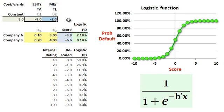Let's say we figured out that the coefficients are negative eight and negative two. The reason these are negative is that as these ratios go up, the probability of default goes in the other direction. As profitability goes up, the probability of default goes down.